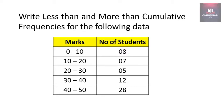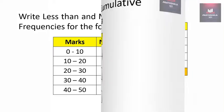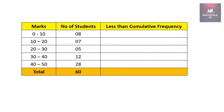Now we will write down less than and more than cumulative frequency for the following data. First, we will find out less than cumulative frequency. The first less than cumulative frequency is the first frequency itself, so the first less than cumulative frequency will be 8.